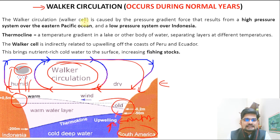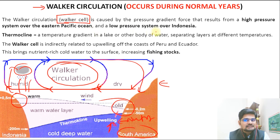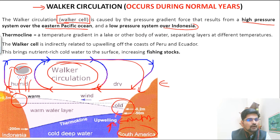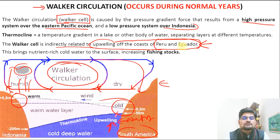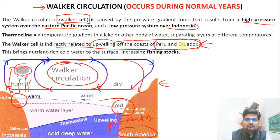This is the Walker cell — high pressure in the Eastern Pacific, low pressure over Indonesia and Northern Australia. The Walker cell is indirectly related to upwelling off the coasts of Peru and Ecuador, making it one of the richest biodiversity coasts in the world with abundant fishing stocks. This is the normal condition.